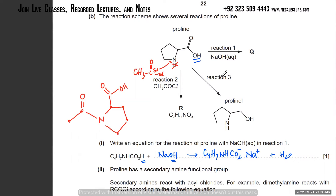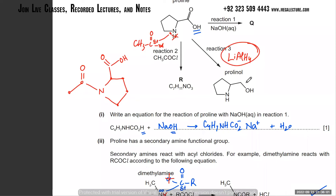Suggest the reagents for reaction 3. You've got a carboxylic acid turning into a primary alcohol - that's reduction. Remember, it's specifically LiAlH4 as the reducing agent.